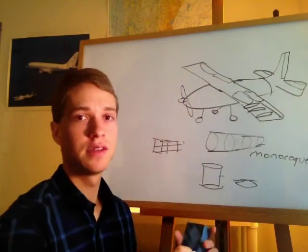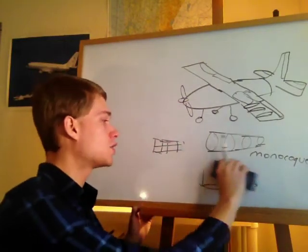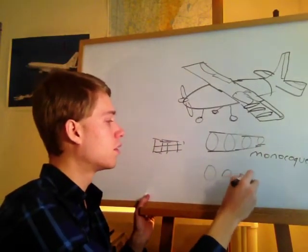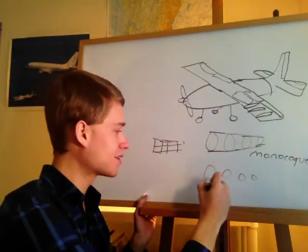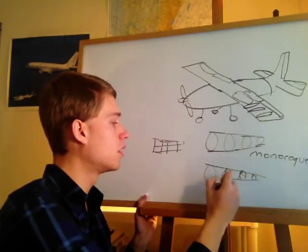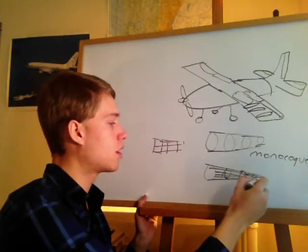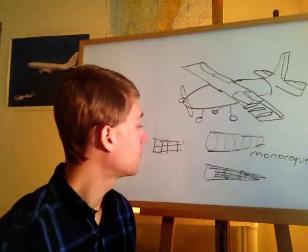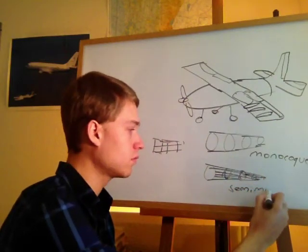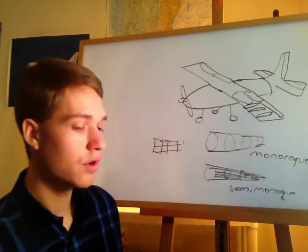The structural integrity of monocoque design is compromised if you get a dent. So there's another approach — you still have these formers, but to help support the load you add stringers along there: rods that help take some of the load. This is called semi-monocoque.